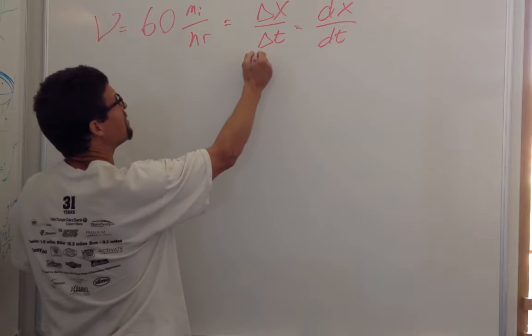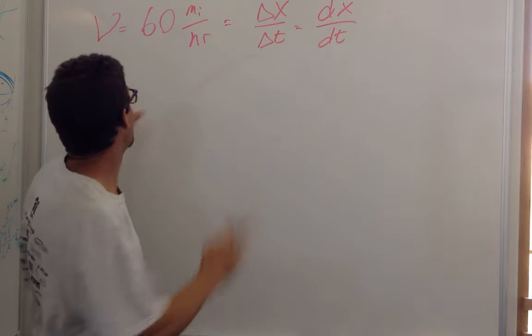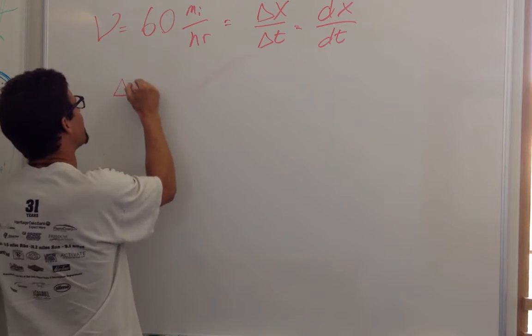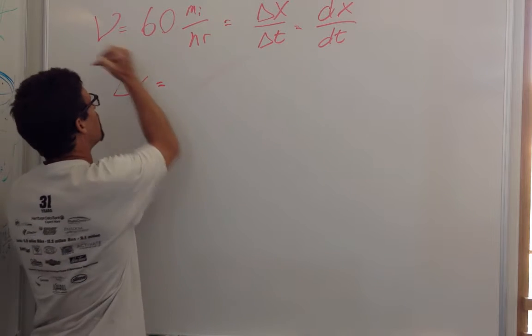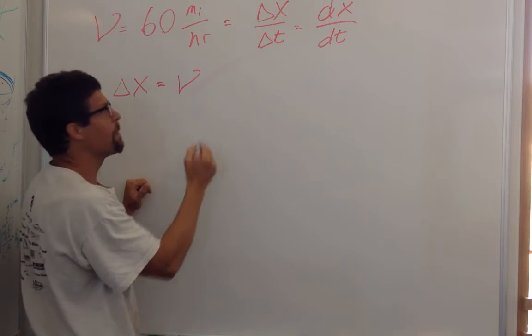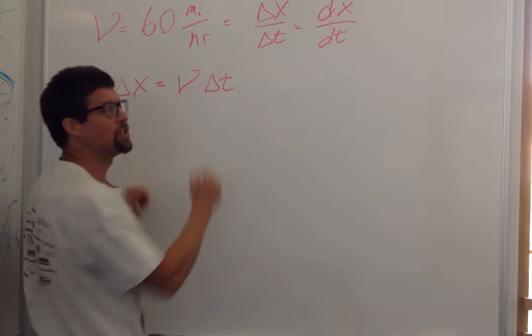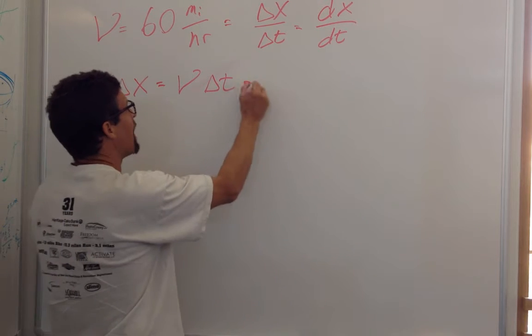So I know I can take this formula and turn it around and say, delta x, my change in position, is going to equal the velocity times the change in time. And I wrote out,